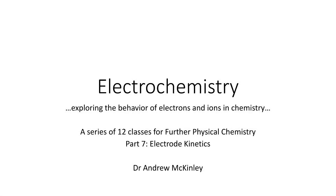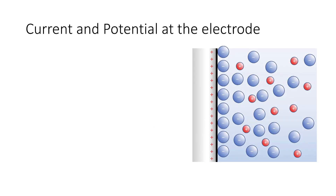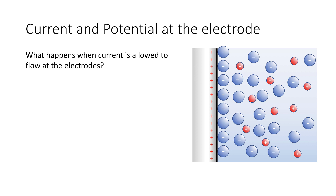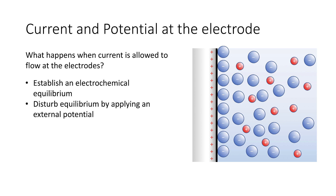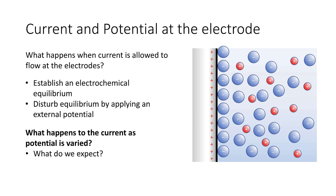In the last session, we explored the thermodynamics of electrode processes. In this session, we're now going to look at the kinetics of what goes on at the electrode. We looked at what happens when we have equilibrium established at the electrodes, but now let's consider what happens when we allow a current to flow. We want to look at what happens to the current as the potential varies — what do we expect to happen and what predictions can we make?